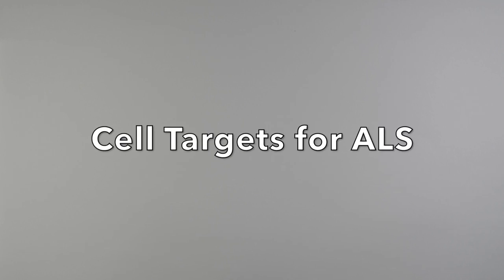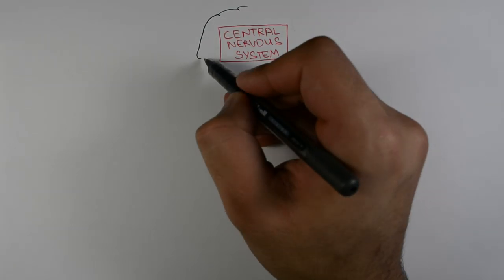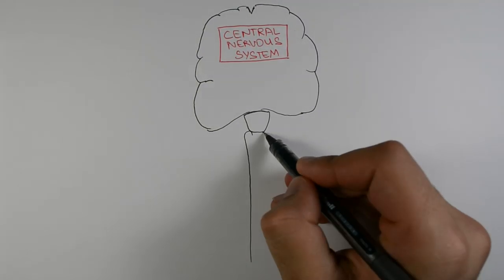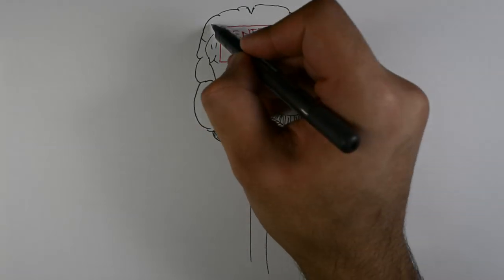In this video we will talk about the cells which play a key role in the development of ALS. ALS is a neurodegenerative disease which means that it affects nerve cells within the body and specifically within our nervous system.